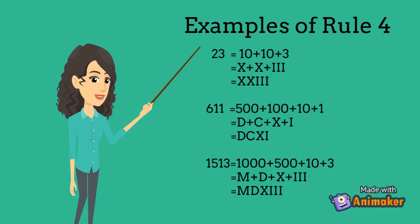Examples of Rule 4: 23 equals 10 plus 10 plus 3. Equals X plus X plus III. Equals XXIII.